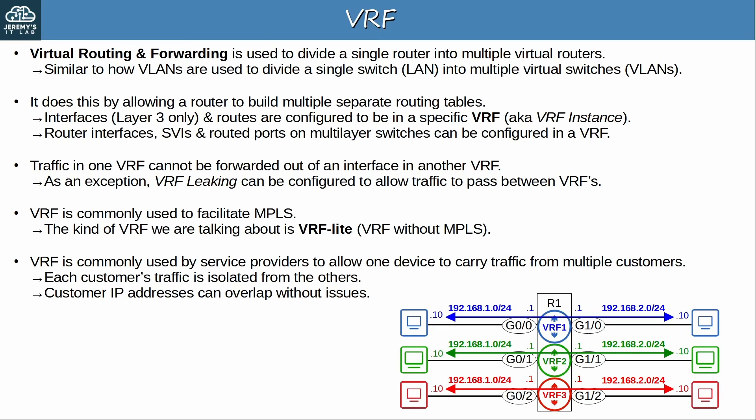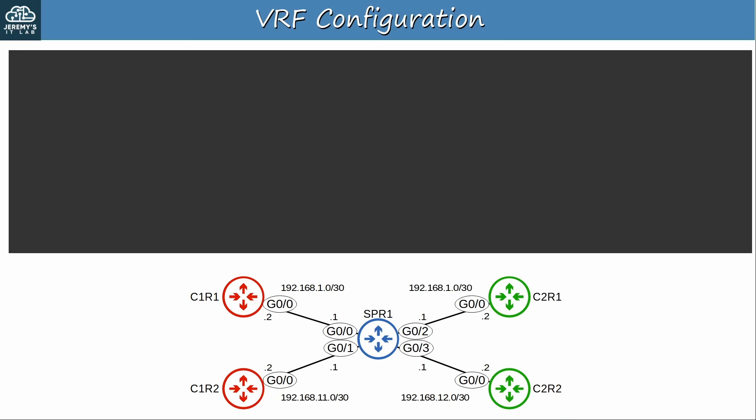Now let's try configuring VRF to help understand how it works. To demonstrate VRF configuration, I'll use the network below. SPR1 is a service provider router, providing WAN services to two customers — customer 1 and customer 2. C1R1 and C1R2 belong to customer 1, and C2R1 and C2R2 belong to customer 2. Both customer 1 and customer 2 use subnet 192.168.1.0/30. First, let's see what happens when we try to configure this without using VRF.